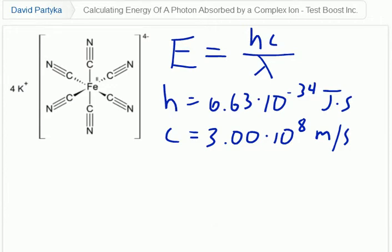In this problem, we're asked to determine the energy of a photon that is absorbed by an octahedral iron complex, ferrocyanide, which features an iron-2 atom surrounded by six cyanide ligands. This complex absorbs a photon at 305 nanometers. The question is, what is the energy of this absorption, and is the light absorbed visible light?